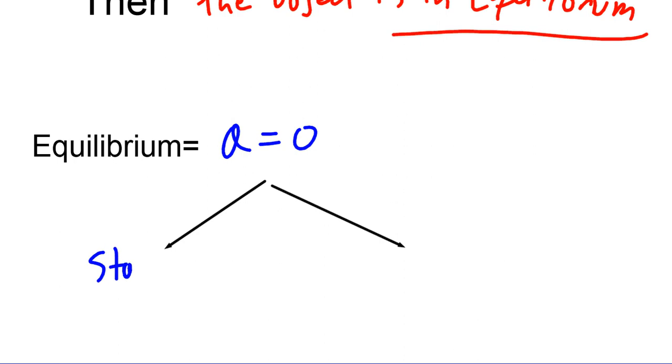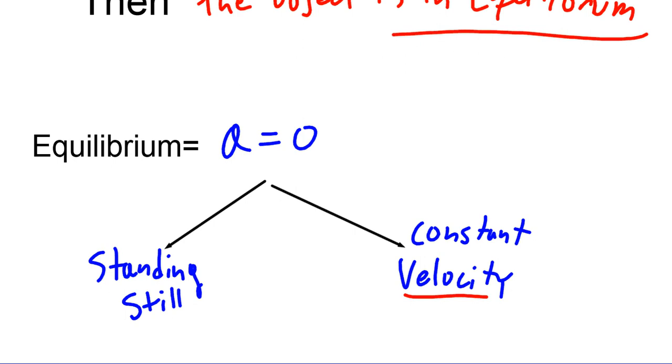Equilibrium means that the acceleration of the object is zero, which means one of two things. Either the object is standing still, i.e. it's not moving, or the object is moving at a constant velocity. Really important to use the word velocity for this because the object could be moving at a constant speed and there's still a force acting on it, but the force could be causing it to change its direction.